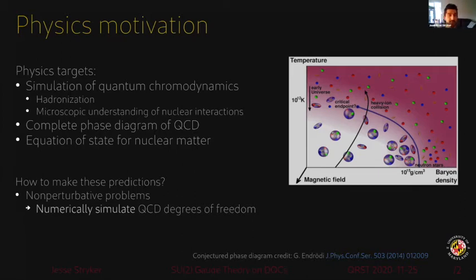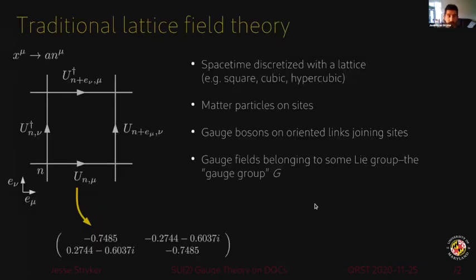Something that we would like to do in nuclear physics is simulate quantum chromodynamics processes such as hadronization in order to get a microscopic understanding of nuclear interactions. We'd like to map the complete phase diagram from QCD from first principles, including deriving the equation of state for nuclear matter. These are non-perturbative problems in general, and so this leads one to have to numerically simulate QCD degrees of freedom.